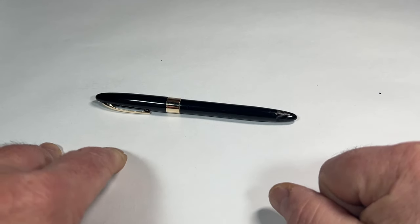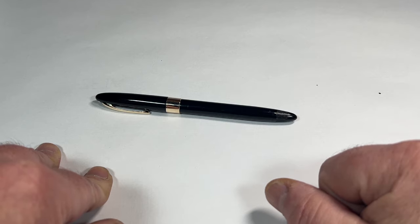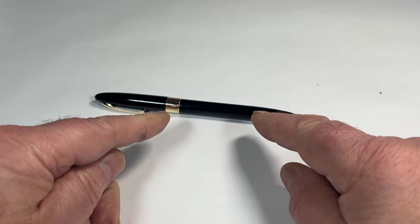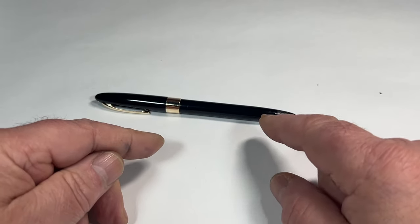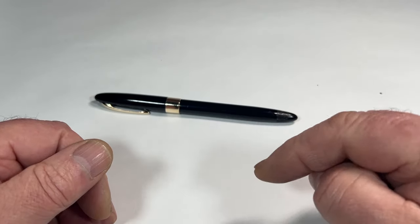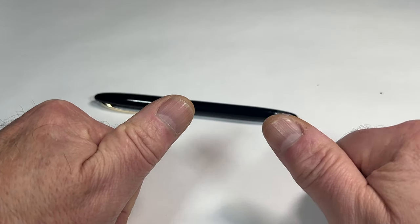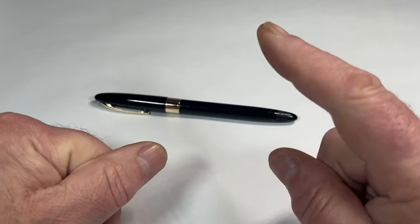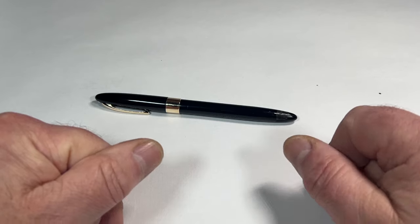So there we have it. A lovely, fully serviced Sheaffer Snorkel Statesman ready to go to the new owner. I hope you've enjoyed watching the video and this pen as much as I enjoy showing them to you people. Don't be shy. Leave a comment below. Give the video a thumbs up if you will. Don't forget to subscribe. But for now, I'm just going to say Slavo Kriini. And from me and this lovely pen, bye-bye for now.